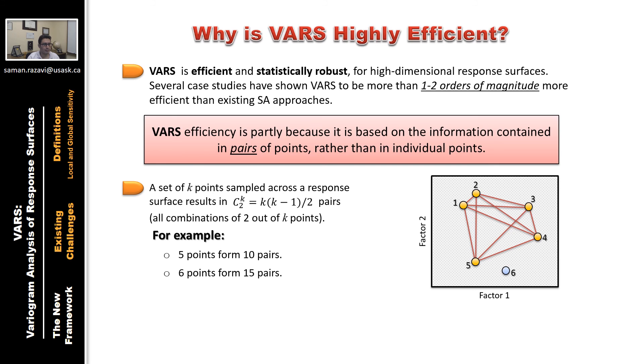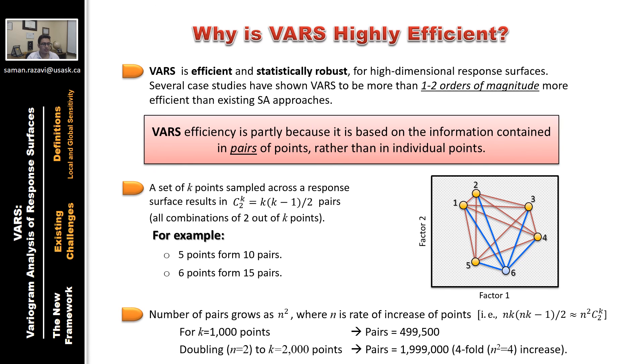If we add another point, having six points, it would result in 15 pairs. In general, number of pairs grows as n squared when n is the rate of increase in the number of points. So, we get so many many pairs out of just a handful of points.